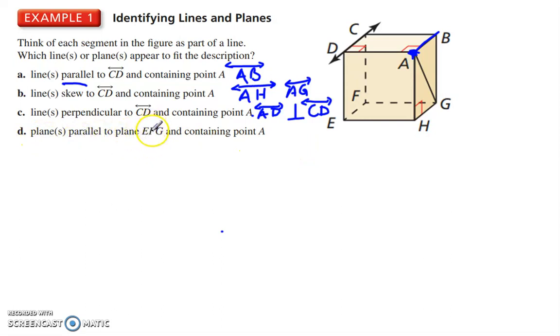And we write perpendicular as perpendicular to CD. Planes parallel to plane EF, G, containing point A. E, F, G. Okay, that's this plane down here. We want a plane that's parallel to that and that contains point A.